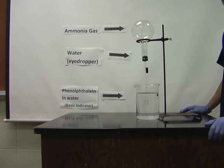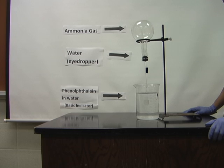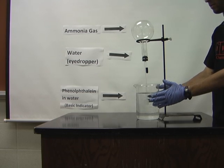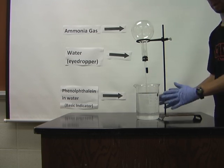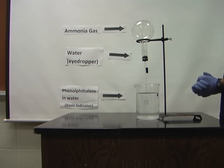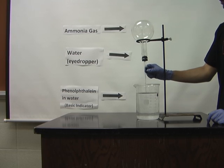This is the ammonia fountain. In this top flask there is ammonia gas. In this beaker there's a mixture of water and a phenolphthalein solution, which is a basic indicator. What I'm going to do is squirt water from this eyedropper into the flask, so let's see what